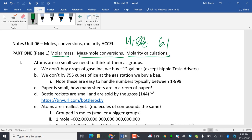So this first part is just a conceptual part. Atoms are so small, we need to think of them as groups. We don't buy gasoline in drops or by the gram. We buy about 12 gallons, except the hippie Tesla drivers.